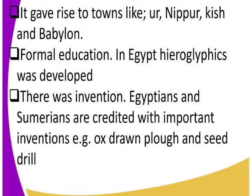Another effect of the development of agriculture in Egypt is that it gave rise to towns like Ur, Mipur, Kish, and Babylon. Babylon is one of the famous cities in the world — it is a renowned city.